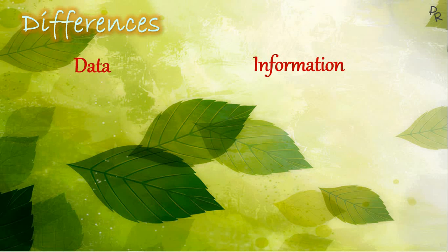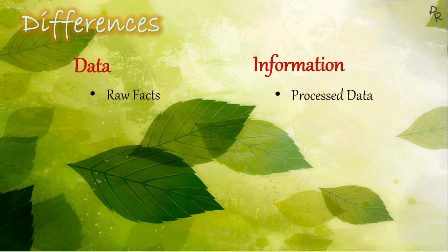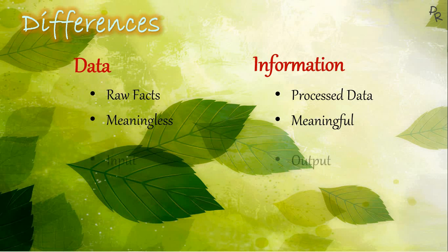To summarize: data is a collection of raw facts whereas information is processed data. Data does not have any meaning whereas information is meaningful. Data is the input which we give to the computer and information is the output which we get from the computer.